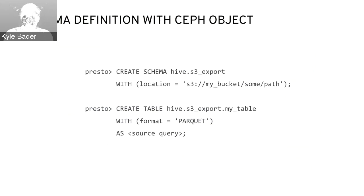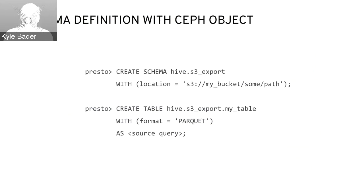In this way you can define schema for data that already exists in the object store, or define schema where you'd like to put new data. Presto is not just a read-only tool — it's a read and write tool. Combined with the variety of different connectors, in addition to data discovery and analytics, you can also use it to move data around. For example, pulling data out of a relational database and storing it in the object store, or migrating from an HDFS-based data lake into an object store as part of a more cloud-style approach.